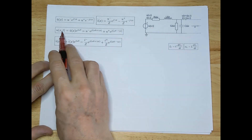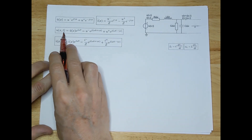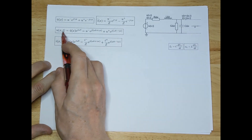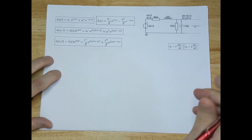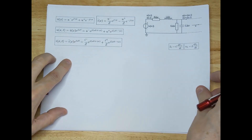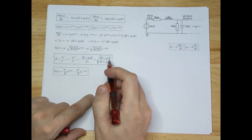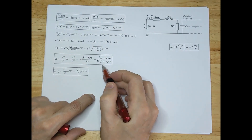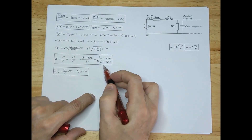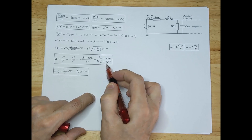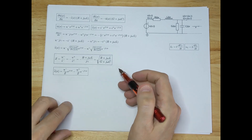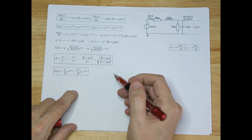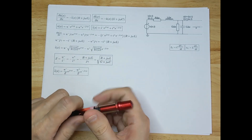So what we calculated is the voltage U(x,t) — at every position X you can find the voltage — the current I(x,t), and the characteristic impedance Z = √[(R + jωL)/(G + jωC)]. That's a great place to stop. If you like this video, please subscribe and like.